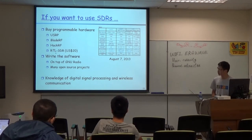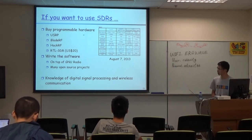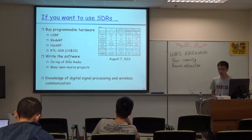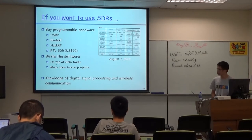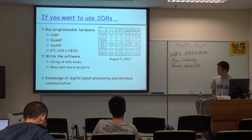If you just want to receive signals and don't need to transmit, there is a cheap choice — around $20 USD. But this option is receive-only. Once you have the hardware, you can write software on top of GNU Radio. There are many open-source projects on the internet with code for many different applications that you can also use.